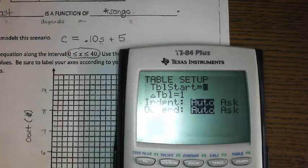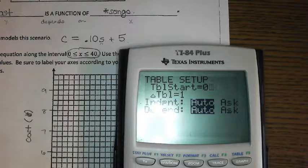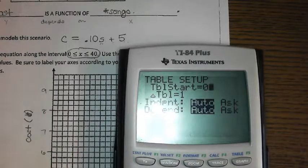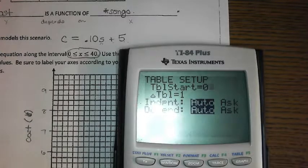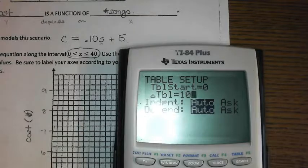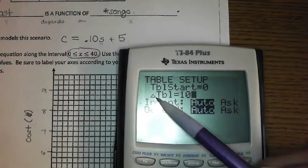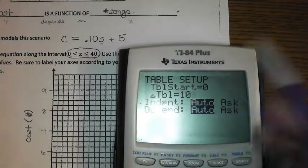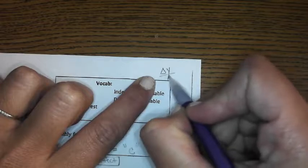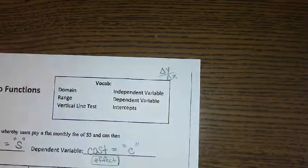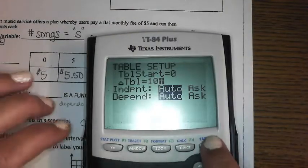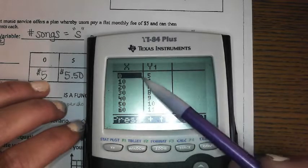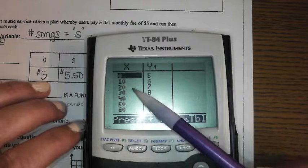My table started at one. Let's say we want it to start at zero. And then we want the change in table. We don't want it to count by ones. We want to maybe count by tens. This little triangle in math means the change in. That's how you want your table to change. Now when I go back to table, now I'm only looking at 0 songs, 10 songs, 20 songs, 30 songs, so I can plot these points on my graph.